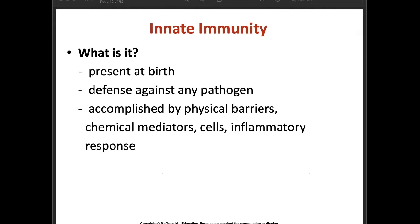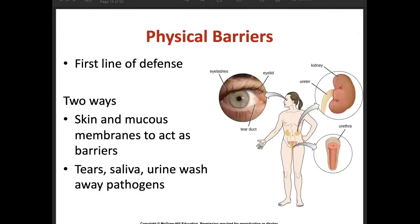Innate immunity is already present at birth. It is defense against any pathogen and is accomplished by physical barriers, chemical mediators, cells, and inflammatory responses. Starting with physical barriers — this is the first line of defense, using our physicality to prevent foreign bodies from entering the body.